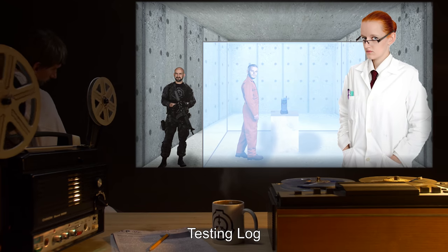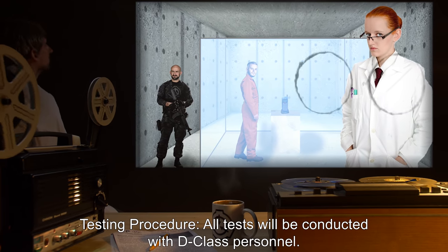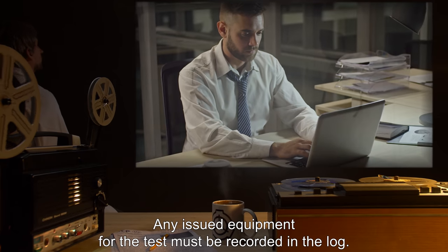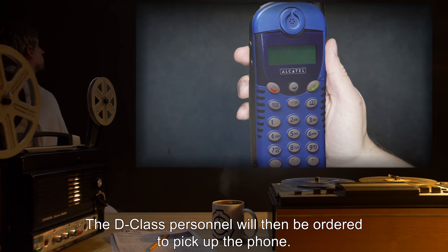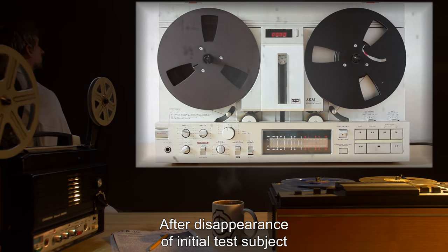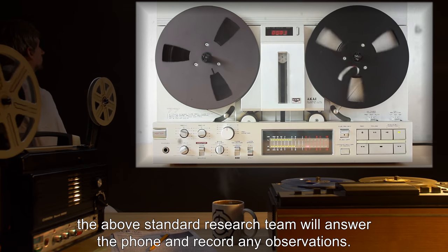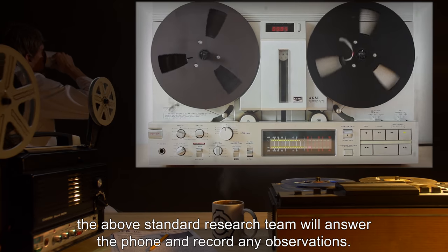Testing Log. Testing Procedure: All tests will be conducted with D-Class personnel. Any issued equipment for the test must be recorded in the log. The D-Class personnel will then be ordered to pick up the phone. After disappearance of initial test subject, the above standard research team will answer the phone and record any observations.